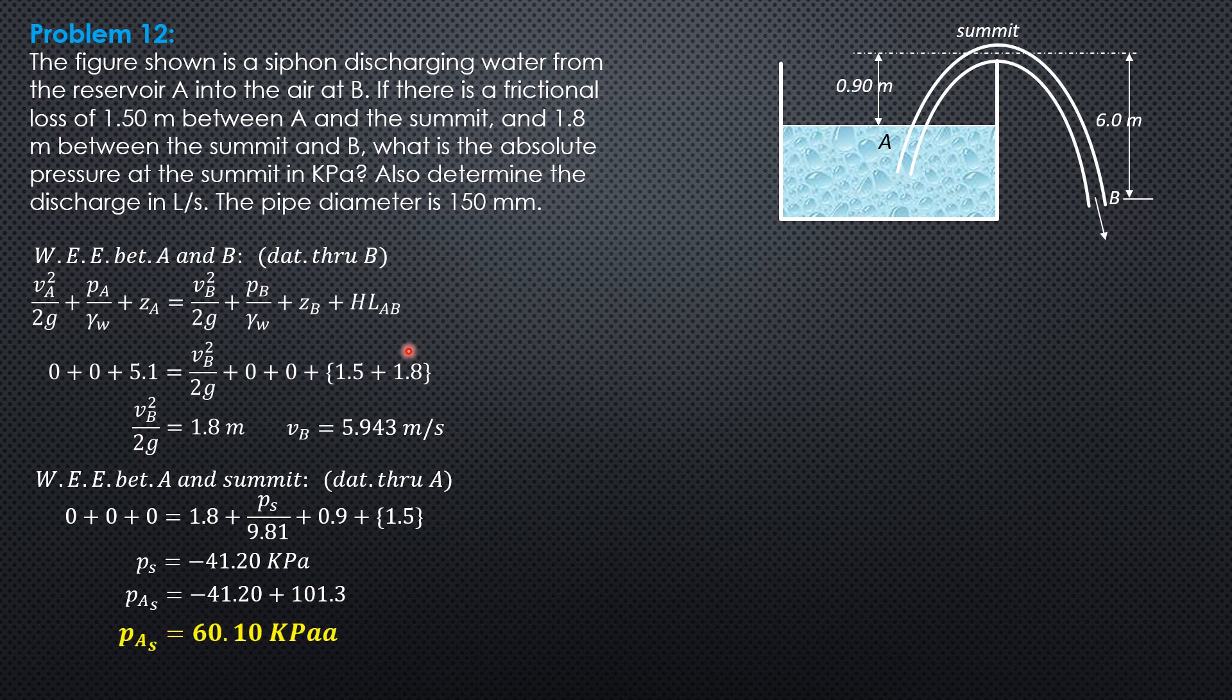Then for the discharge in liters per second, Q is pi over 4 times diameter 0.15 squared times velocity 5.943 times 1000. So the discharge is 105.0 liters per second.